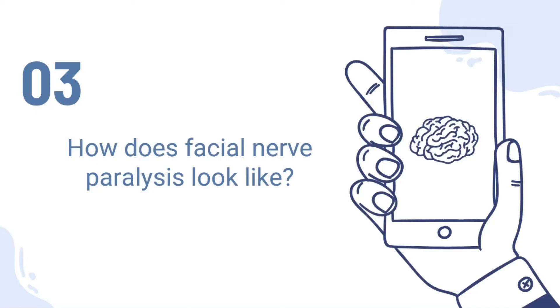How does facial nerve paralysis look? Sudden weakness in the facial muscles — half of the face may appear to droop. The smile is one-sided, and the eye on the affected side resists closing.